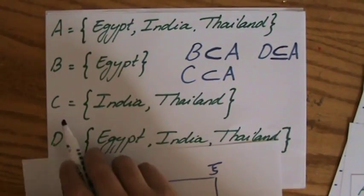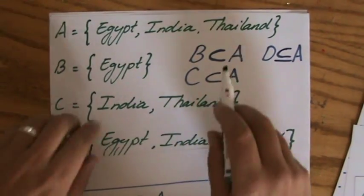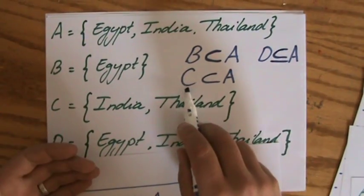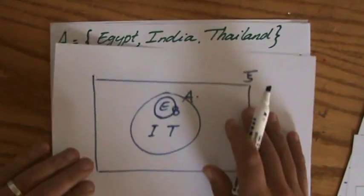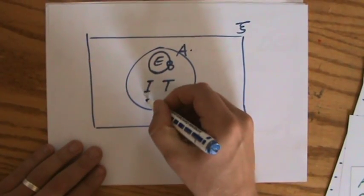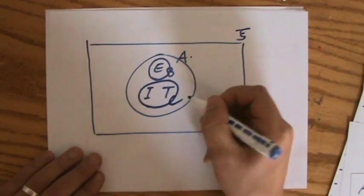Same for set C containing India and Thailand. It's also a proper subset because the entire set C lies inside A.